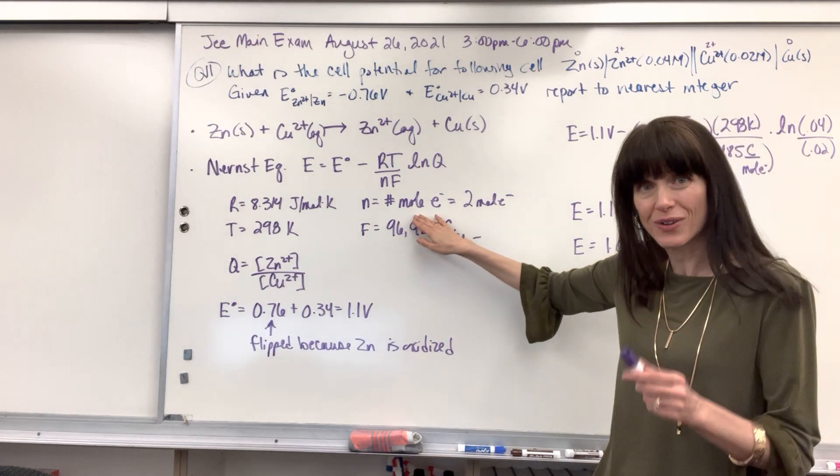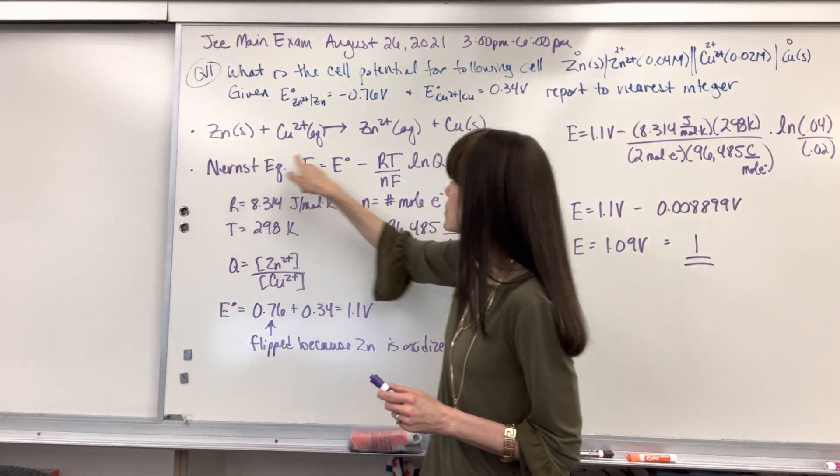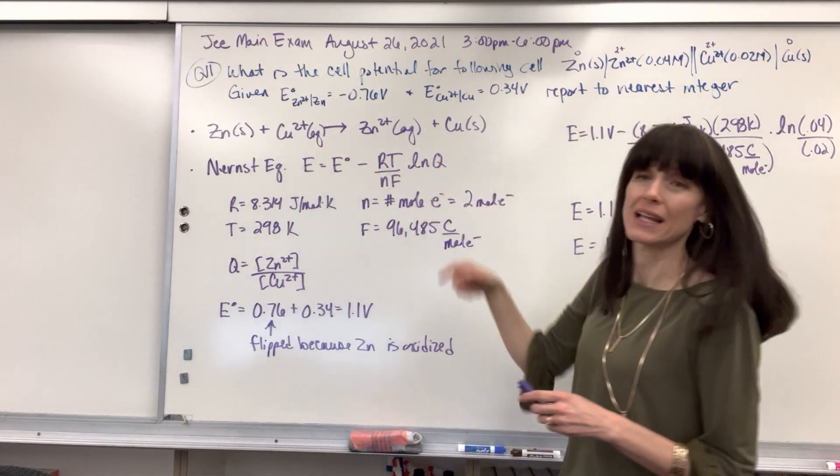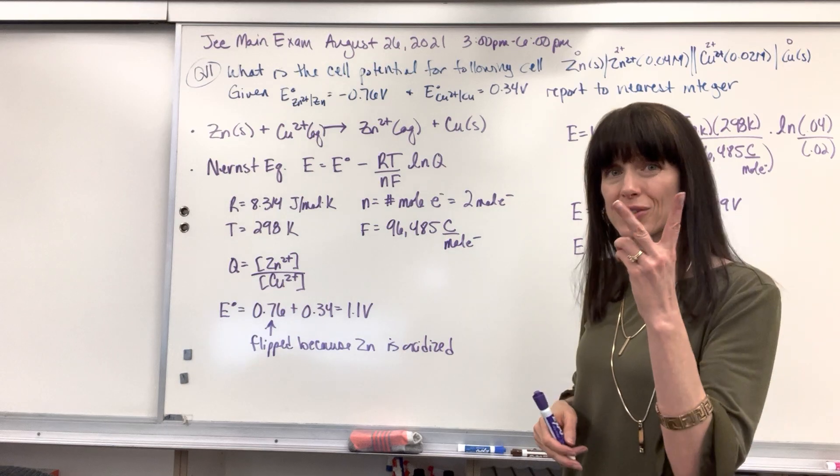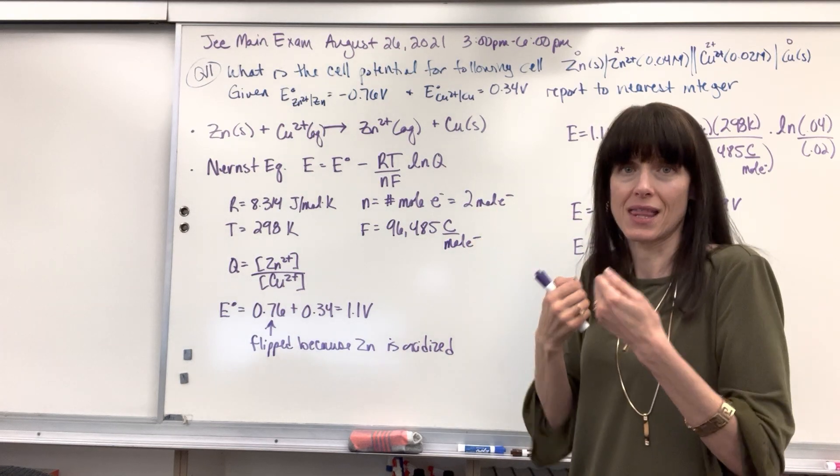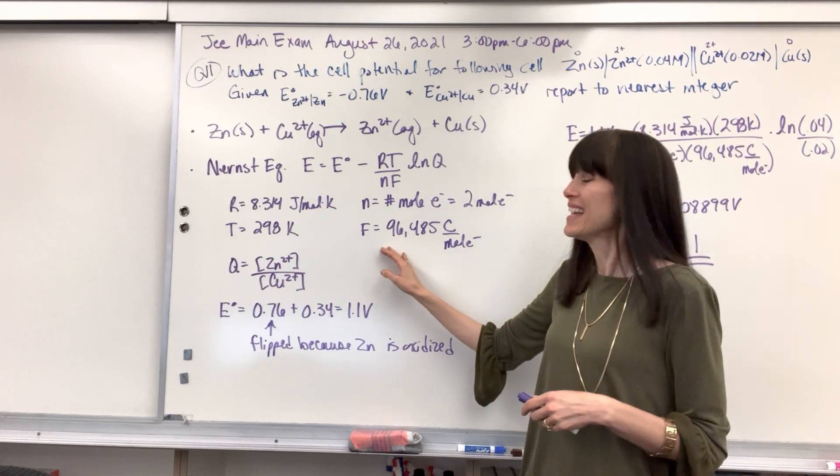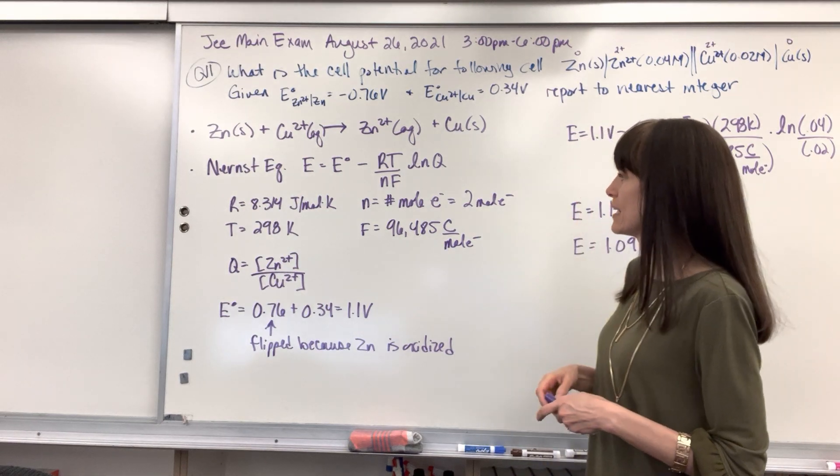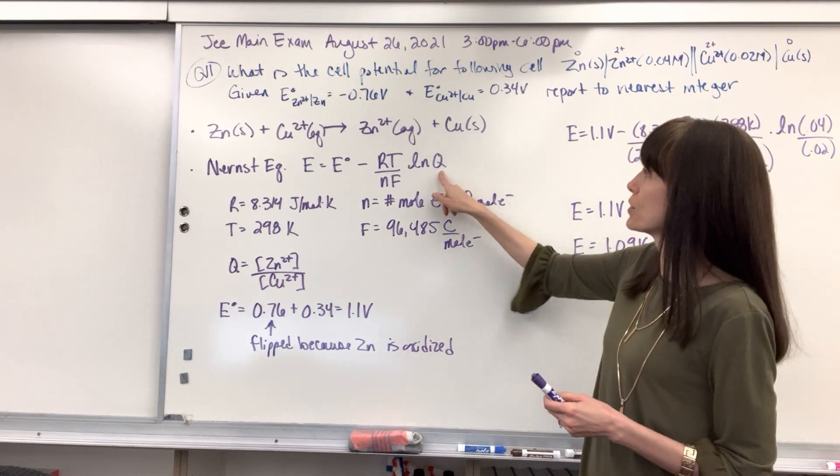N is the moles of electrons that are gained or lost. We are going to here lose two electrons, which means the copper gains two electrons. So in this particular situation, two electrons are going to be lost and then gained, two total electrons. F, Faraday's constant, and that's 96,485 coulombs per mole of electron.